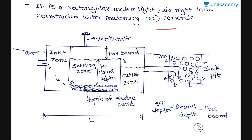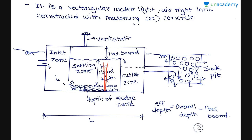Looking at the section of a septic tank: the influent enters at the inlet zone, then passes into the settling zone. In the settling zone, after the detention period, sludge settles at the bottom — this is the depth of the sludge zone. The liquid depth H is measured from the sludge zone up to the water surface, and a freeboard is provided above that. Gases evolved during anaerobic digestion are passed through a vent shaft to the atmosphere.